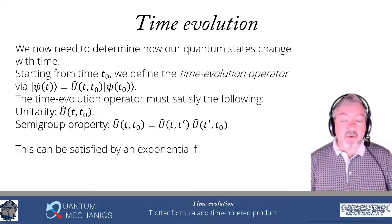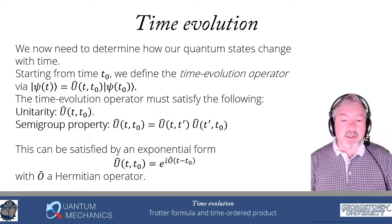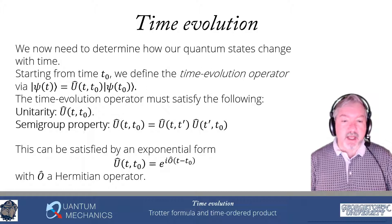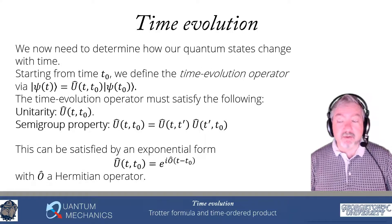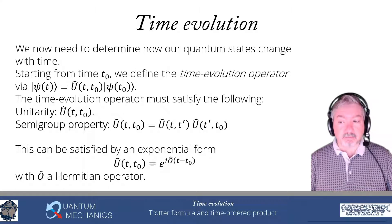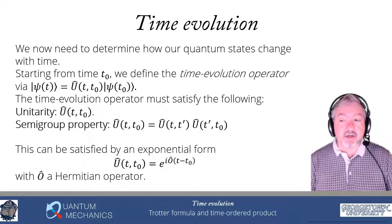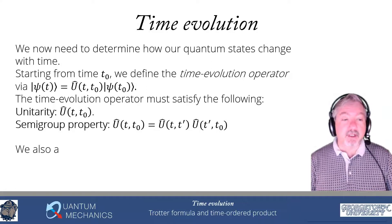The exponential of i times a Hermitian operator is a unitary operator. If that Hermitian operator depends on time in a linear fashion, that will satisfy these two conditions. It's not the only way to satisfy them. We'll modify it slightly, because the operator O might also change with time, so we want to be very careful and work with small time intervals.